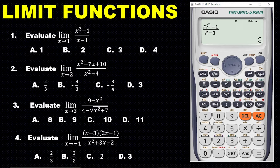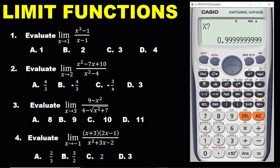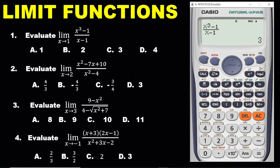If you want to confirm using a number from the right-hand side, press CALC again and enter 1.000000. This is also a number close to one but not one. Press the equal sign and we are still getting three. Since the limit from both sides is three, the answer is option C.